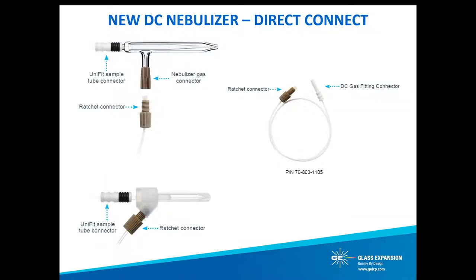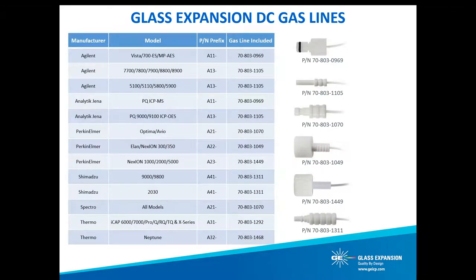In 2016, Glass Expansion introduced the Direct Connect DC gas line, providing an upgrade to our U-Series nebulizer product line with an inert metal-free ICP-specific gas line. The reliable ratchet click-and-seal fitting to the nebulizer gas arm ensures a leak-free gas connection by clicking or ratcheting when a proper seal has been achieved, preventing over-tightening. At the other end of our DC gas line is an ICP-specific quick connect to the argon gas supply. In the table, you can see a list of the variety of style gas connectors that are currently available and provided with each of our nebulizer models specific to that particular part number.